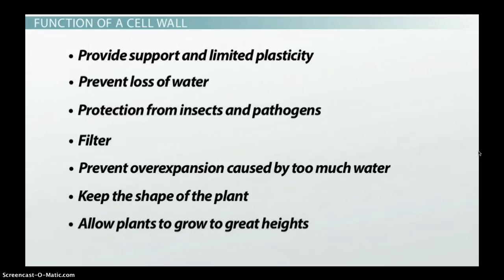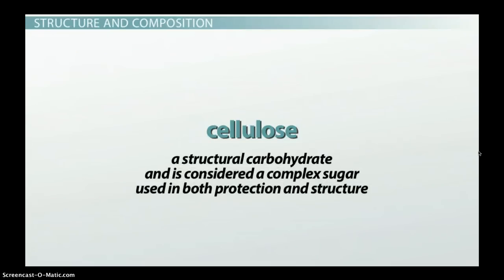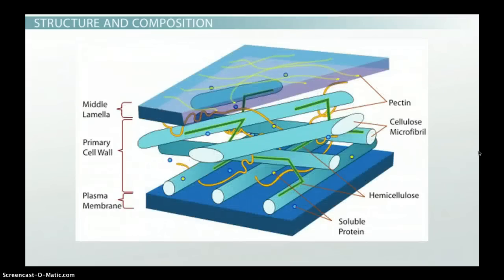The plant cell wall is composed of cellulose. Cellulose is a structural carbohydrate and is considered a complex sugar because it is used in both protection and structure. The plant cell wall consists of three layers. Each layer has its own unique structure and function. The layers may vary depending on the type of plant and its needs.